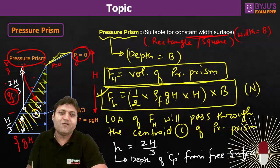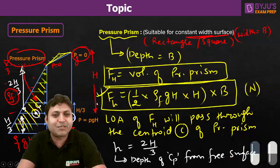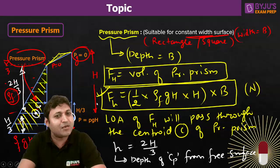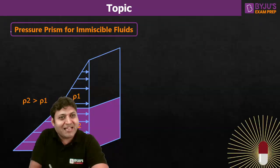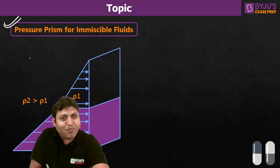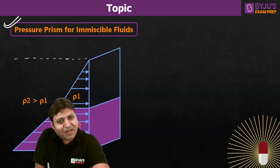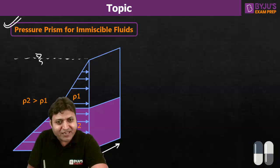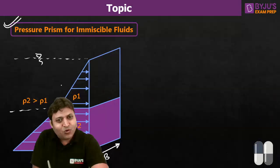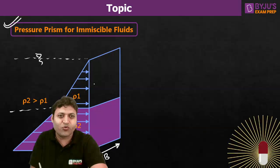That is how we find out the hydrostatic force and its point of application using the pressure prism. The method is more important when there are multiple fluids. For example, consider a plane surface again having width B, but immersed in two fluids: one with density rho_1 and another with density rho_2, where rho_2 is greater than rho_1.